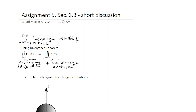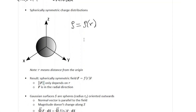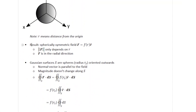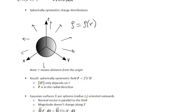In section 3.3, the problems involved were spherically symmetric, and the charge density was only a function of the distance from the origin. So it didn't depend on phi and it didn't depend on theta. As a result of this, the vector field produced is going to be in the radial direction. And its magnitude is only going to be a function of the distance from the origin. So here I sketched F, which is equal to some function of the distance from the origin times R hat.